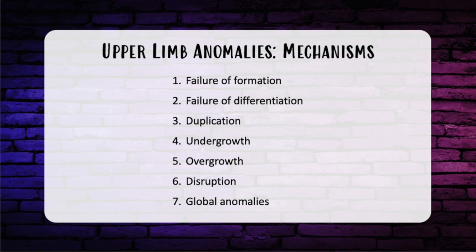Now let's focus on congenital hand anomalies. They have a classification system that's not commonly used today because of many confounding variables, but grouping this way makes it easier to follow along. The categories include: failure of formation with missing parts, failure of differentiation where parts are present but abnormal, duplications like polydactyly or mirror hand, overgrowths like macrodactyly, undergrowths, issues like constriction band syndrome, and global anomalies like Apert syndrome.